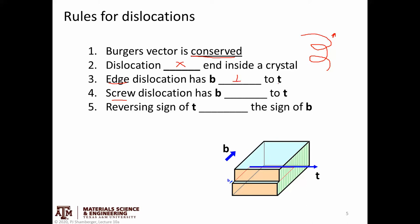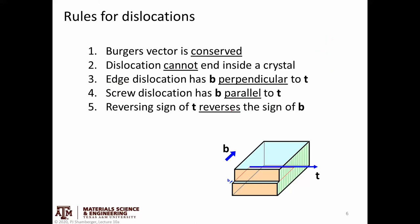T is a tangent vector to the dislocation at any point. For a screw dislocation, the Burgers vector is parallel to the tangent vector. And reversing the sign of T reverses the sign of the Burgers vector as well.